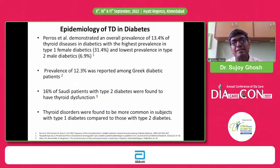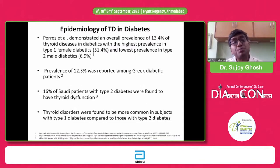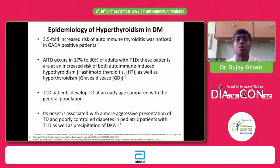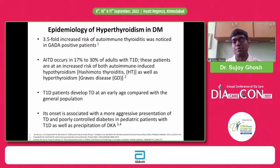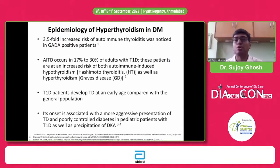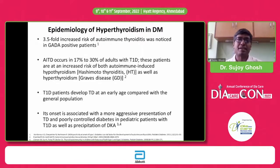Looking at data particularly for type 1 diabetes, they are much more likely to have thyroid dysfunction as compared to a type 2 diabetic individual. Particularly in type 1, there seems to be a very strong association of autoimmune thyroid disease with GAD antibody positive type 1 diabetes, where thyroid dysfunction can happen in up to 30% of the population in a much younger group. If type 1 children and young adolescents have hyperthyroidism, it could very well precipitate diabetic ketoacidosis.